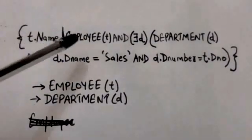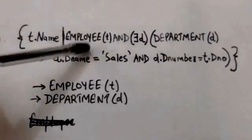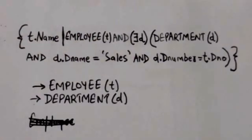The condition specified after the bar in this query will be satisfied by every employee tuple for which there exists at least one tuple in department relation such that the value of Dno attribute in employee tuple is same as